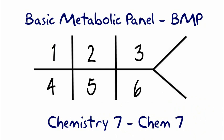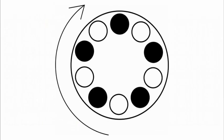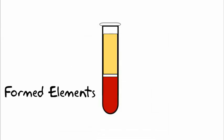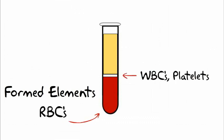So blood is drawn from the patient, and then it's sent to the lab, where it gets spun in a centrifuge. This separates the blood into formed elements like red blood cells, or white blood cells, and platelets.